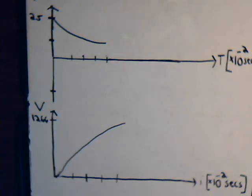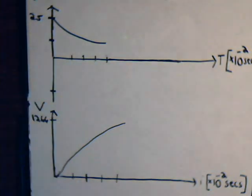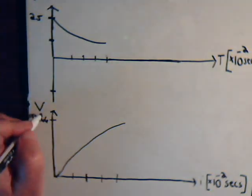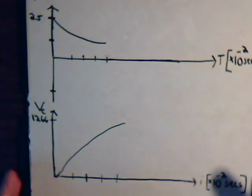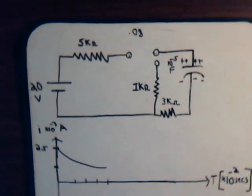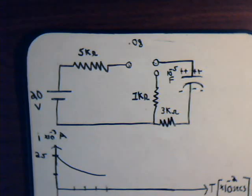Notice that as the voltage on the capacitor increases, the current decreases. That makes sense because as the charges accumulate on the capacitor they oppose the current flow.